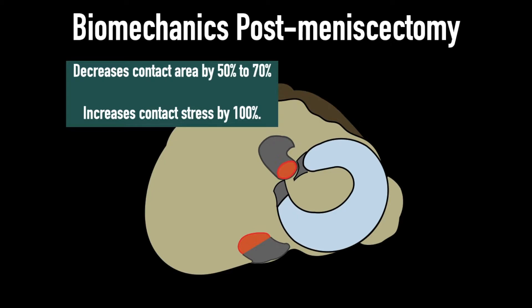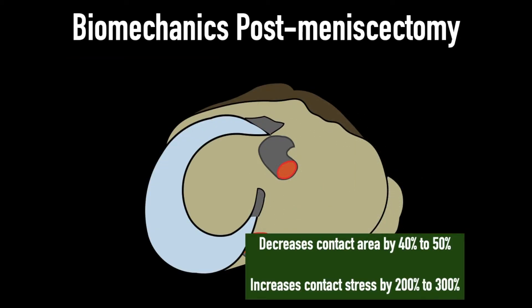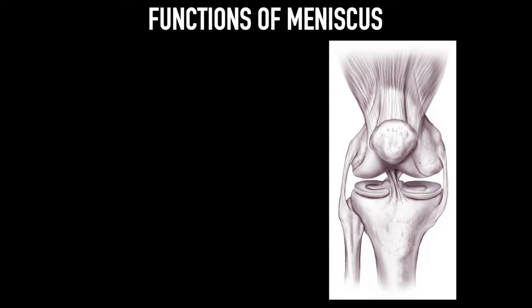This paradigm shift — from complete excision of the meniscus to meniscus repair — has come because of biomechanical studies showing that with total medial meniscectomy, contact area decreases by 50 to 70% and contact stress increases by 100%. With lateral meniscectomy, contact area decreases by 40 to 50% and contact stress increases by 200 to 300%. This biomechanical study was very impactful in making this paradigm shift in the treatment of the meniscus.